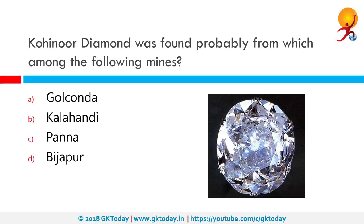The Kohinoor diamond was found probably from which among the following mines? The correct answer is Golconda. The Golconda diamonds are Indian diamonds mined within the historic Golconda Sultanate, which is in present-day Telangana and Andhra Pradesh. Diamonds from these mines were transported to the city of Hyderabad to be cut, polished, evaluated and sold well within the 19th century.